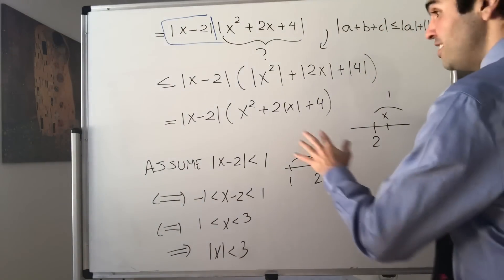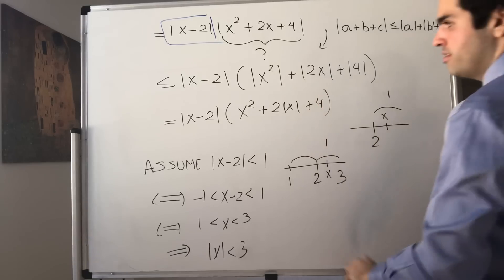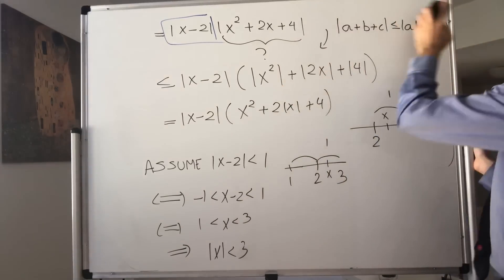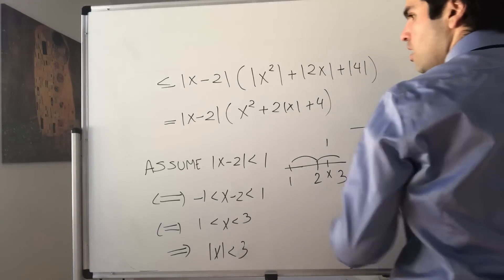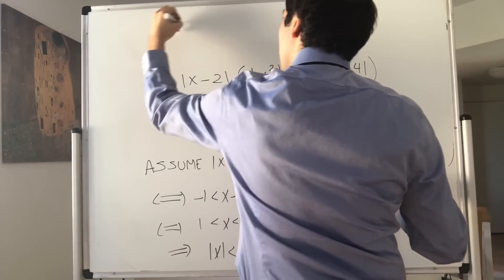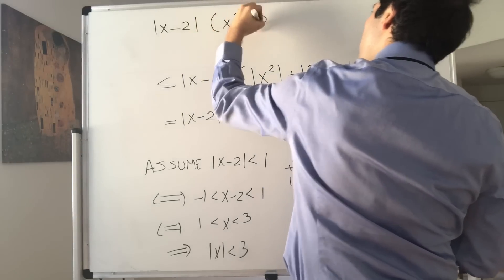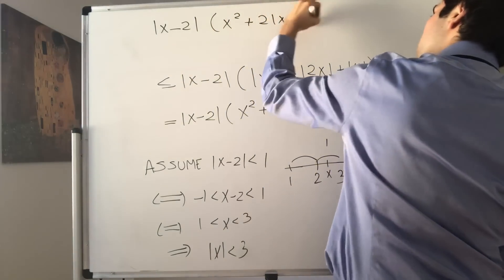Because x is between 1 and 3. That's very good because now we can estimate all those things. Now let's go back to x minus 2 times x squared plus 2 absolute value of x plus 4.